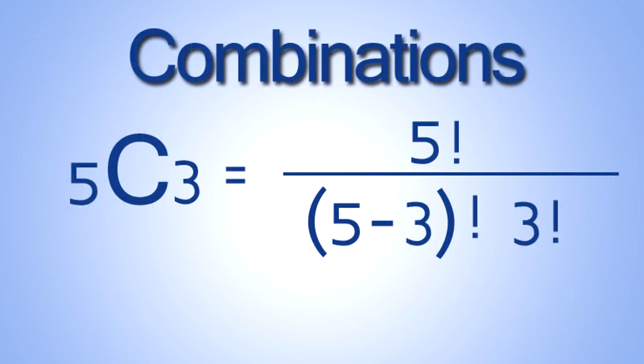So the combination notation is 5C3. You can also say five choose three. n is equal to five because there are five total items to choose from, and r is equal to three because you can choose three items.